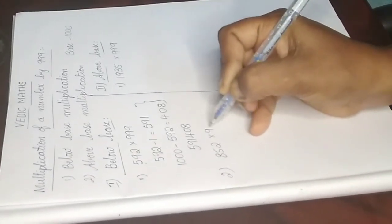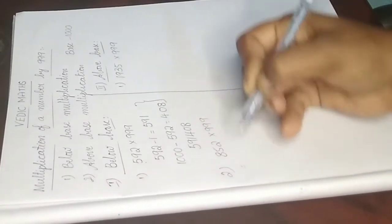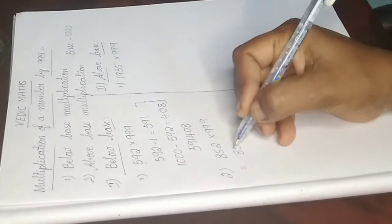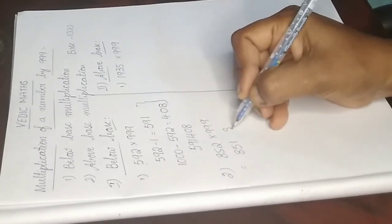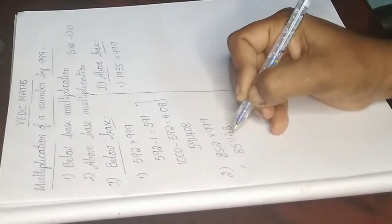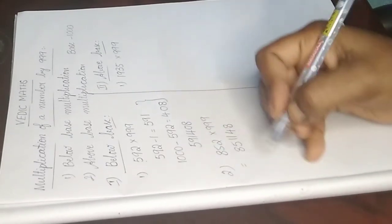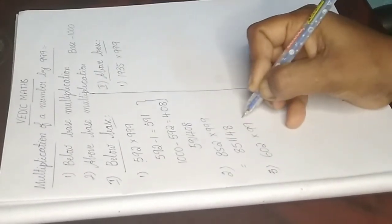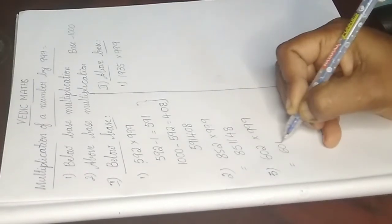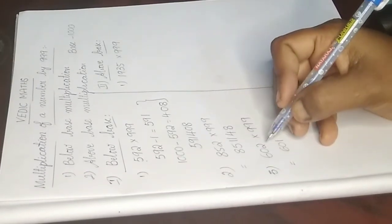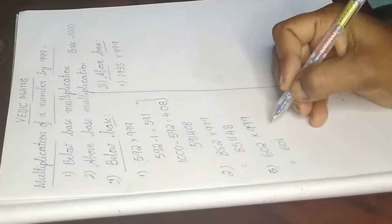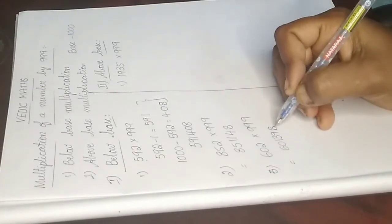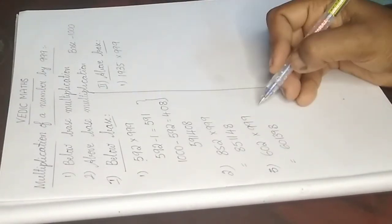One more problem: 852 into 999. The before number of 852 is 851. And 1000 minus 852 is 148. So the final answer is 851148. One more problem: 602 into 999. The before number of 602 is 601. And 1000 minus 602 is 398. So the final answer is 601398. This is about below base multiplication.